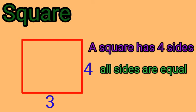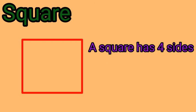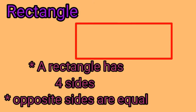Next shape: rectangle. Rectangle has four sides—first side, second side, third side, and fourth side. Opposite sides are equal. First side and third side lengths are equal. Second side and fourth side lengths are equal.